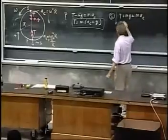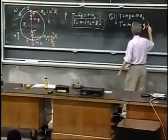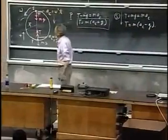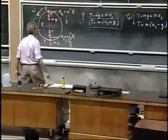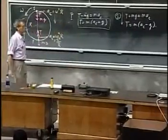So I find that the tension there equals M times A of C minus G. Hey, very similar to what I've seen before. This object is losing weight.